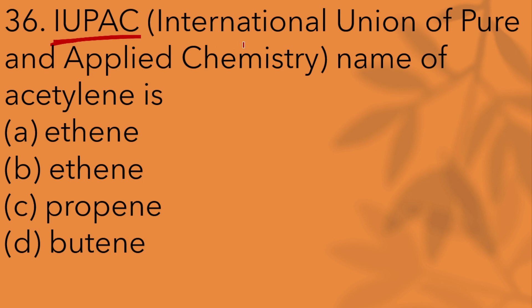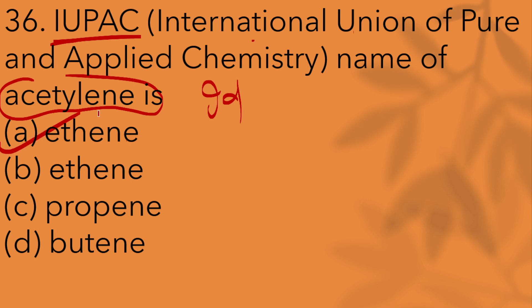What is the IUPAC name of acetylene? IUPAC stands for International Union of Pure and Applied Chemistry. The IUPAC name of acetylene is ethyne. Options include ethane, propane, and butane.